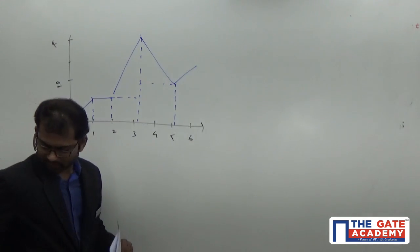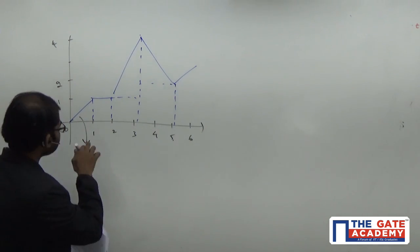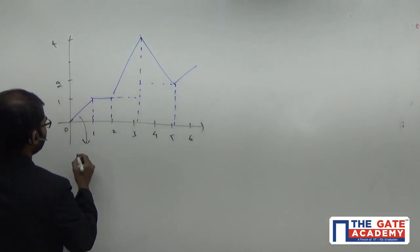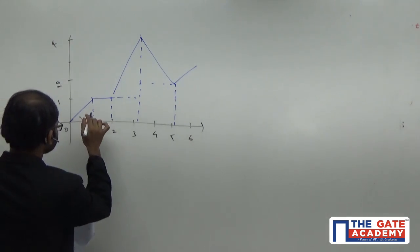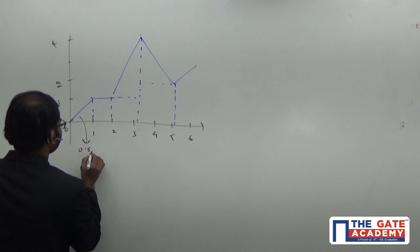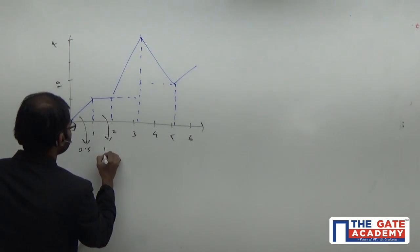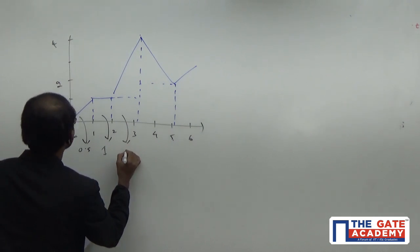So, if you find out these areas here for these different sections, for this one, the area is equal to simply given by area of the triangle, half into 1 into 1. So, it is equal to half into 1 into 1. So, area is equal to 0.5. For this one, the area is equal to given by 1 into 1. So, it will become 1. For this one also, it is equal to 1.